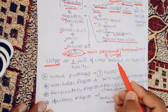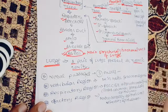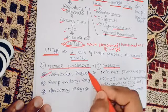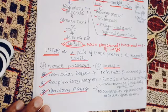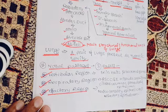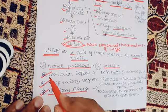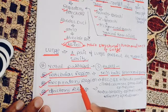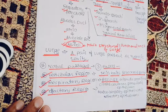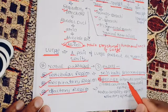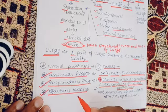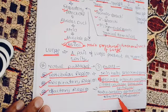The lungs are present in the thoracic cavity. The nasal passages are divided into three parts: the vestibular region, the respiratory region, and the olfactory region. The epithelium of the respiratory system is called pseudostratified ciliated columnar epithelium. The vestibular region has skin, hairs, and sebaceous glands. The olfactory region has neurosensory epithelium, also called olfactory epithelium.